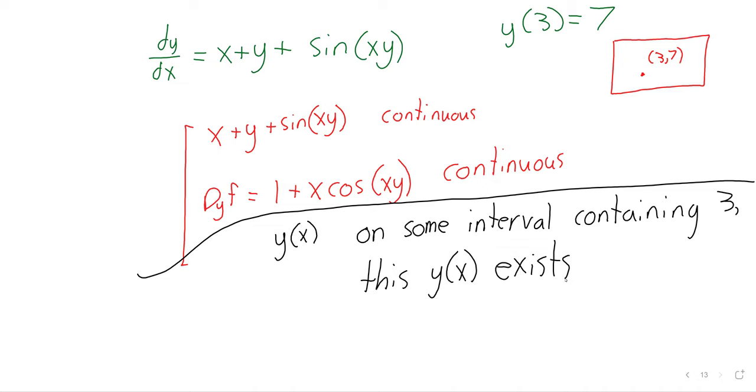The fact that the interval contains 3 is significant because if the solution didn't exist at 3, then the statement that the solution equals 7 at 3 wouldn't make any sense. It would contradict itself.